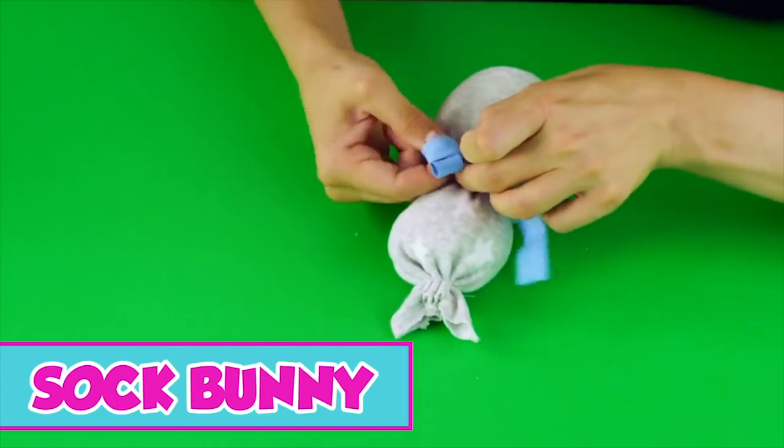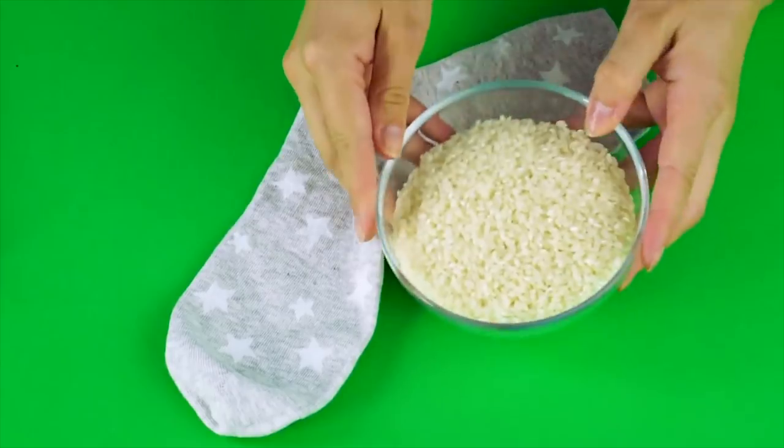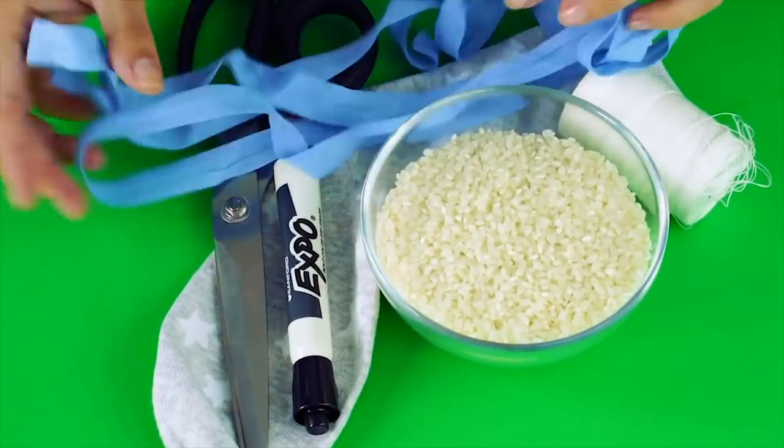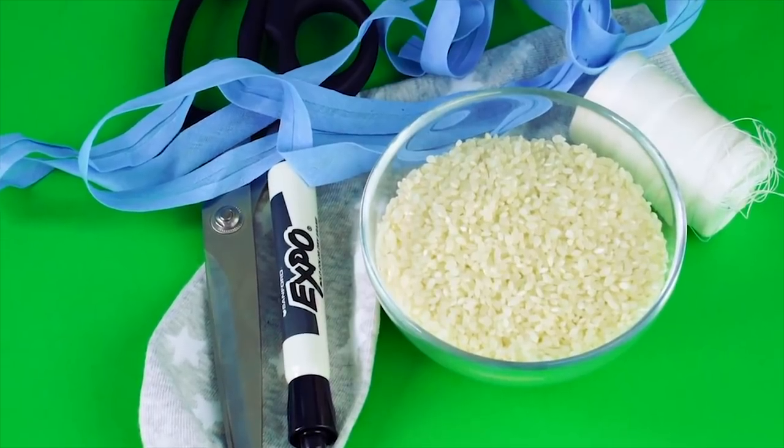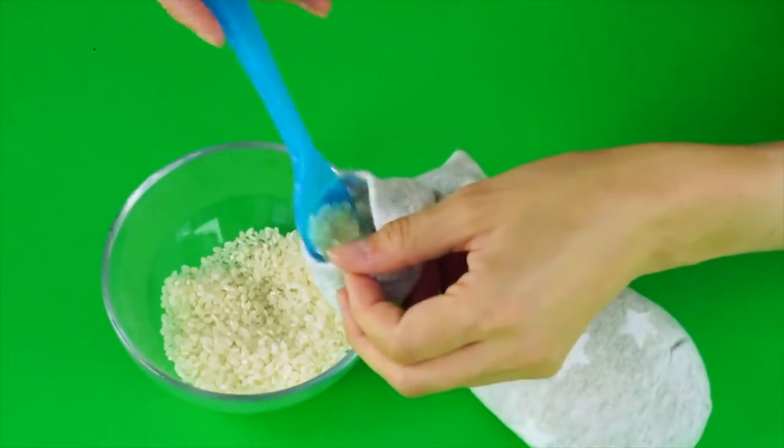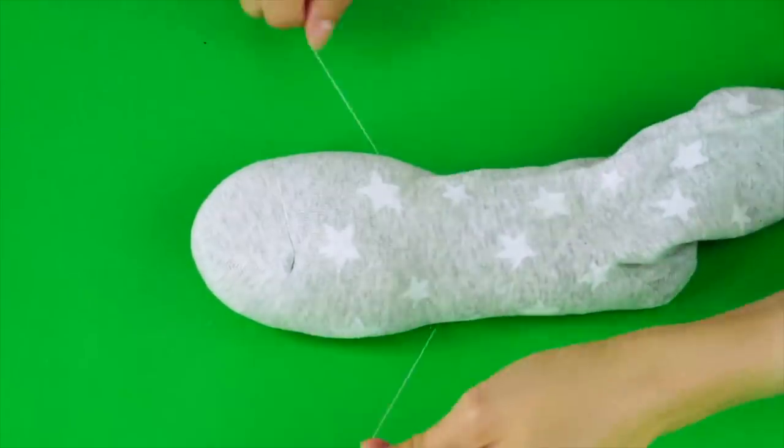Sock Bunny. If you're anything like me, you've got a lot of solo socks hanging around. Let's give one of those socks an adorable purpose. Grab a sock, some rice, a marker, some scissors, thread, and ribbon. Use a spoon to fill the sock with rice. Next, tie thread around the sock like this to make a head and body.